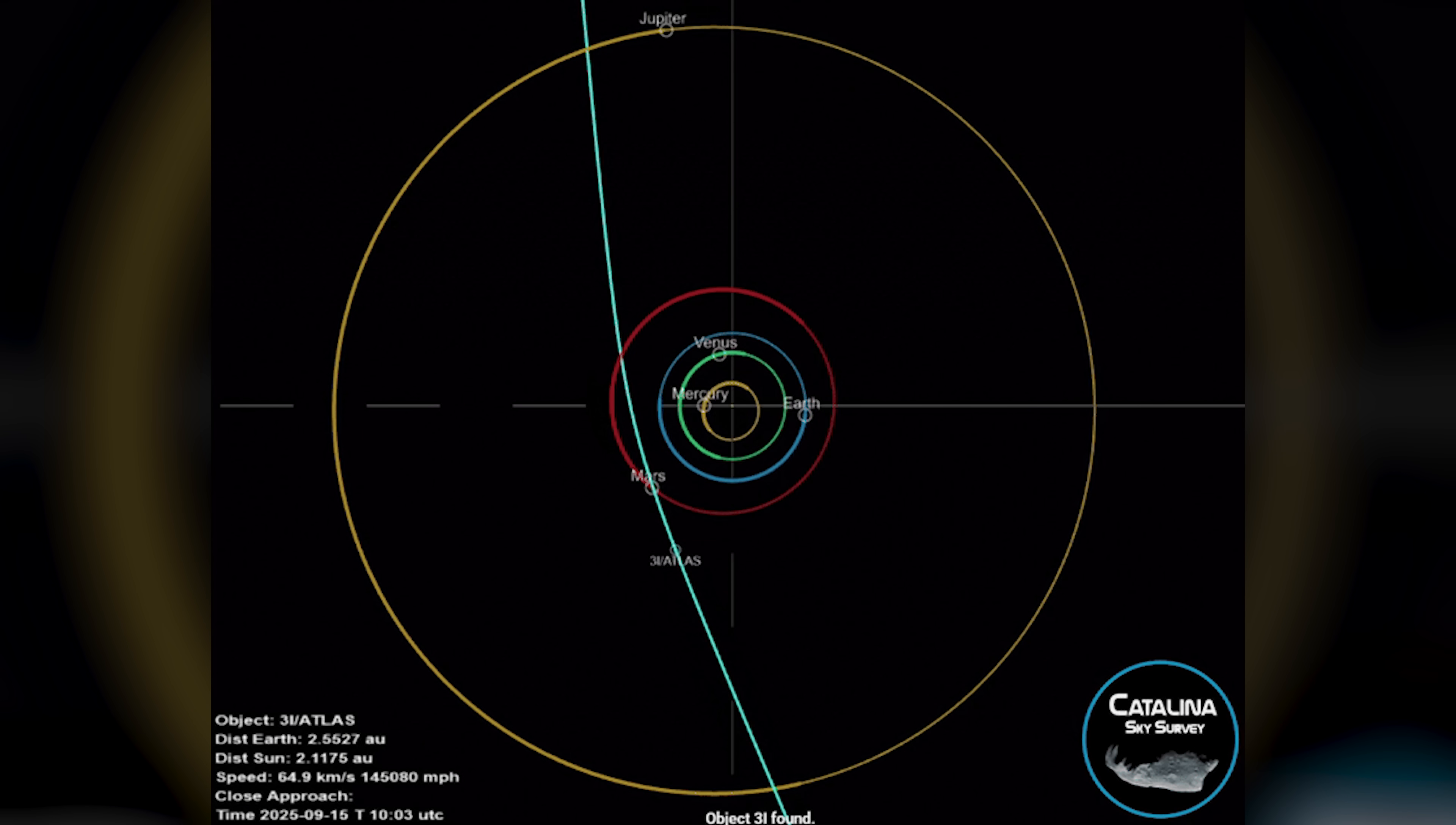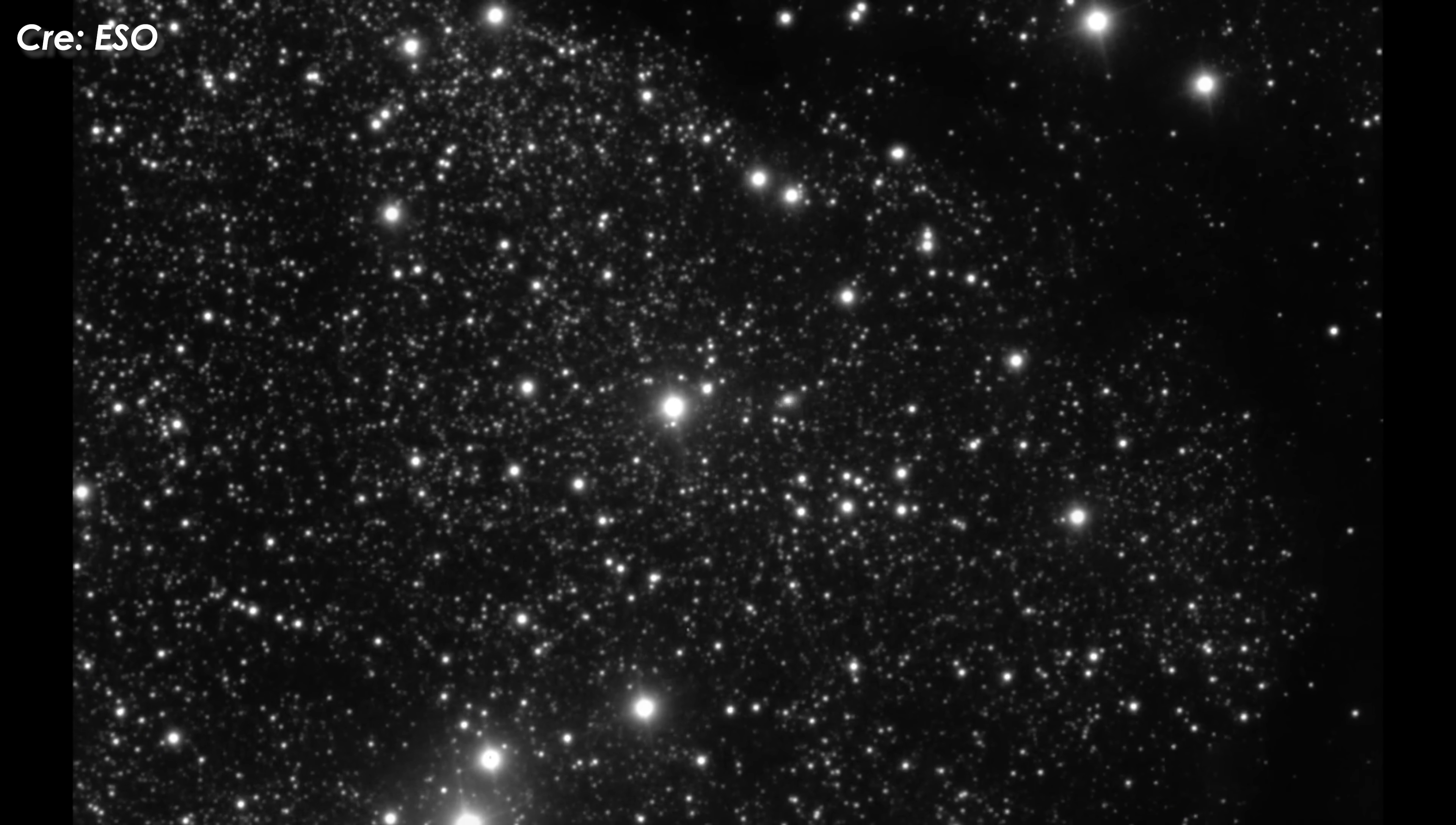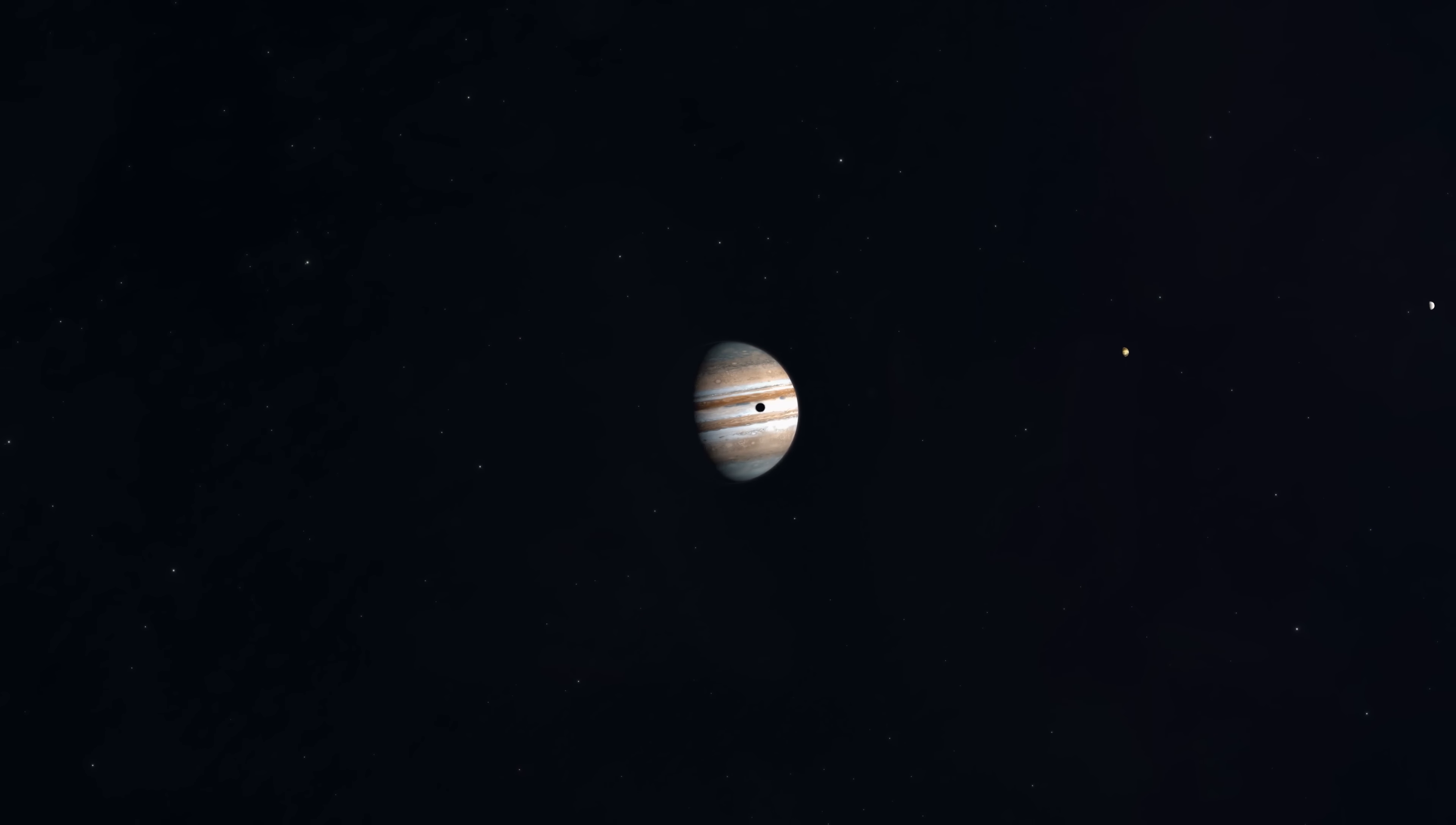It was heading into the inner solar system at a distance of 4.5 astronomical units, about 670 million kilometers from the Sun, near Jupiter's orbit, 5.2 astronomical units.